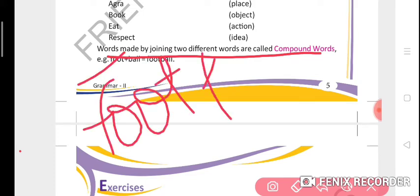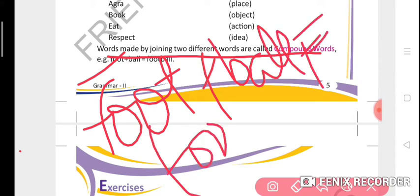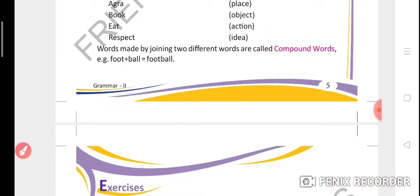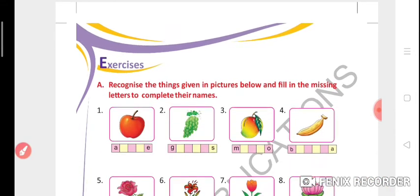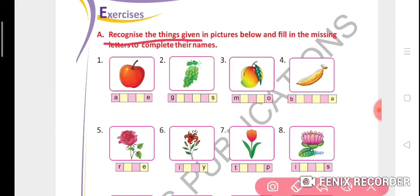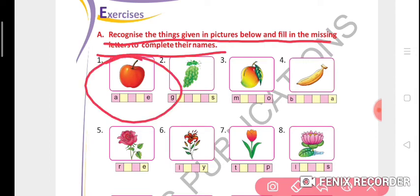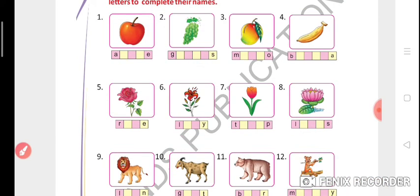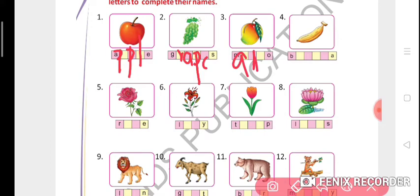Okay, so let's move to the exercise. Recognize the things given in the pictures below and fill in the missing letters. The first one is apple: A-P-P-L-E. Second, grapes: G-R-A-P-E-S.